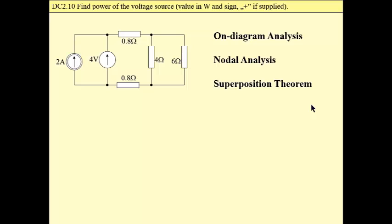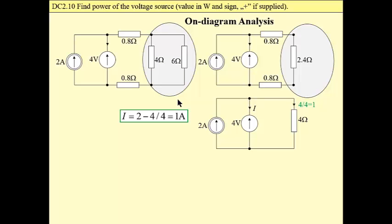So at first, on-diagram analysis. But for all these three approaches, the first step is a replacement of this passive two-port which is built of 8Ω, 0.8Ω, 0.8Ω, 4Ω and 6Ω resistors. We may easily replace these resistors by a single one. These two resistances in parallel will give 2.4Ω, and then in series with these two will give 4 ohm equivalent resistance.